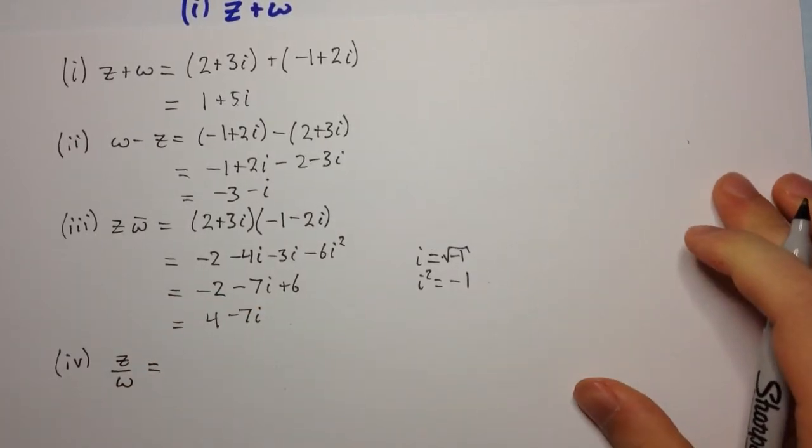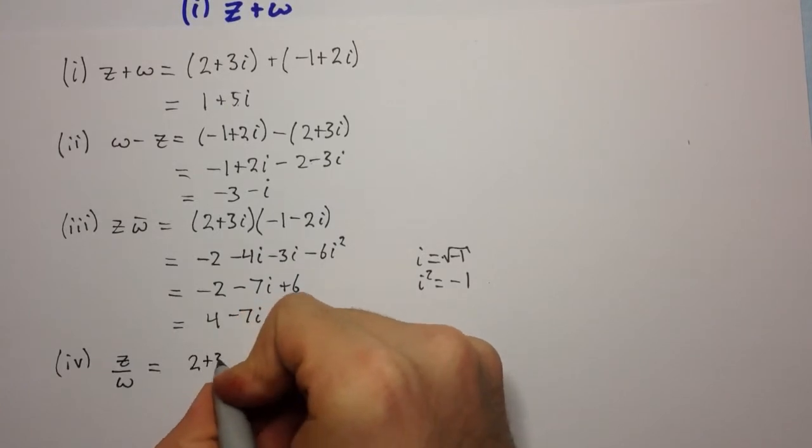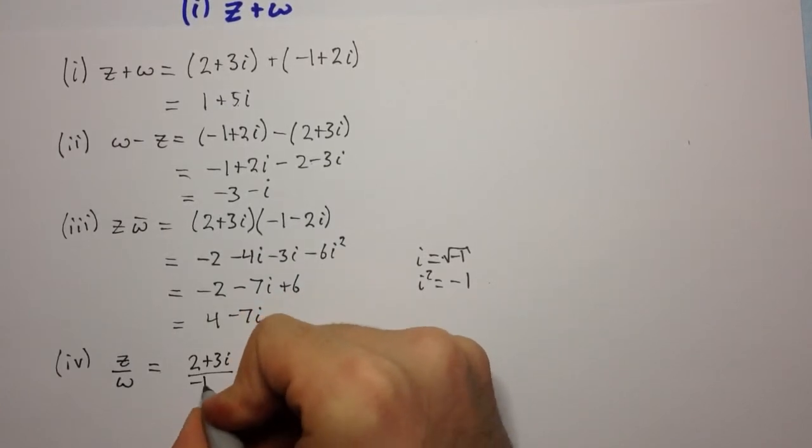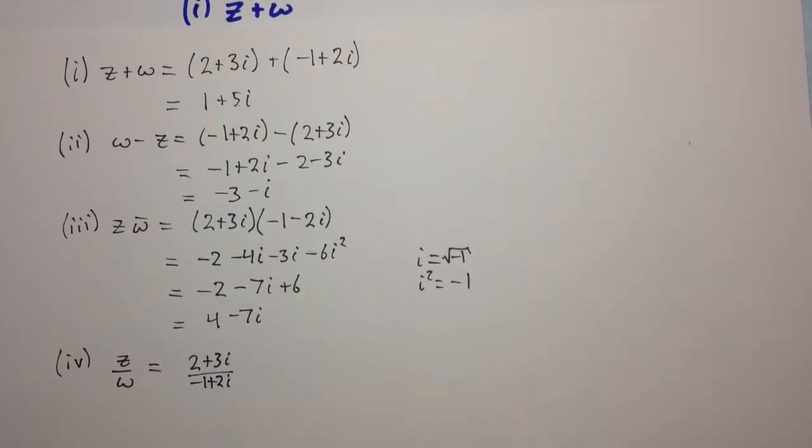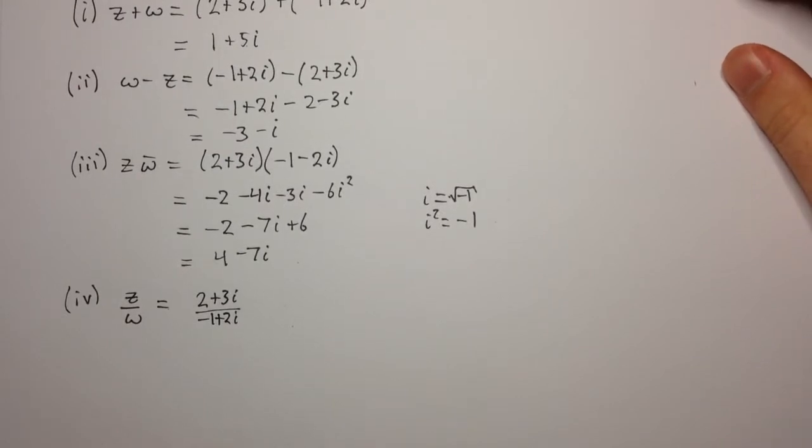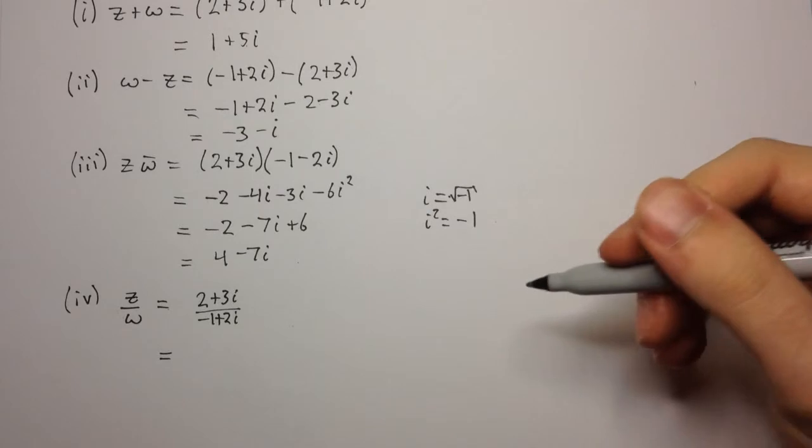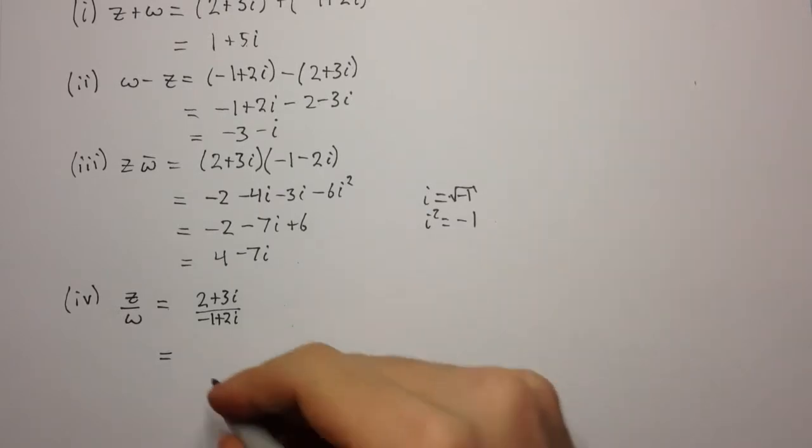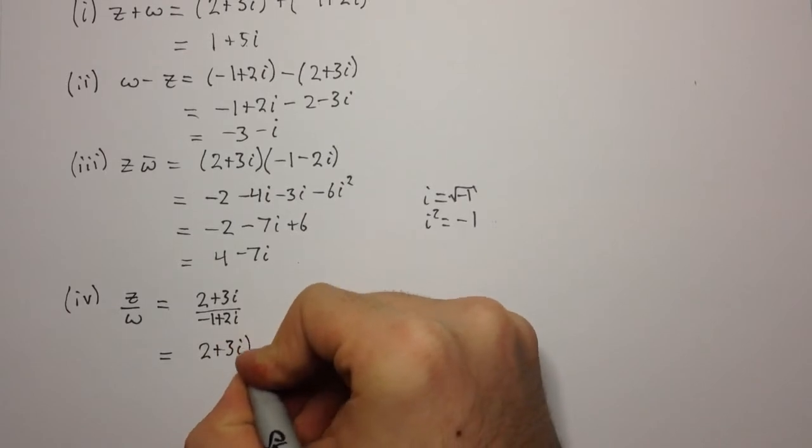When we want to divide two complex numbers, in our case 2 plus 3i divided by minus 1 plus 2i, our aim is to make the denominator a real number. The way we do this is by what's called realizing the denominator. We multiply the numerator and the denominator by the conjugate of the denominator.